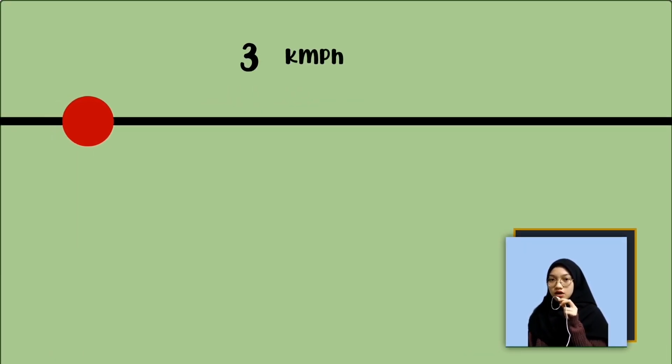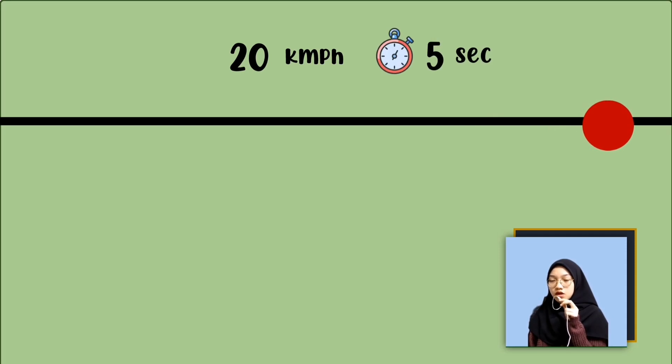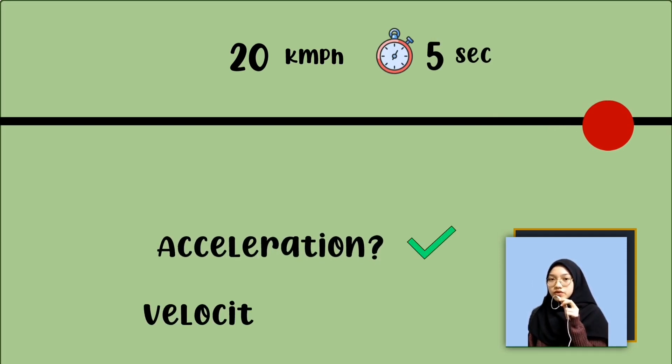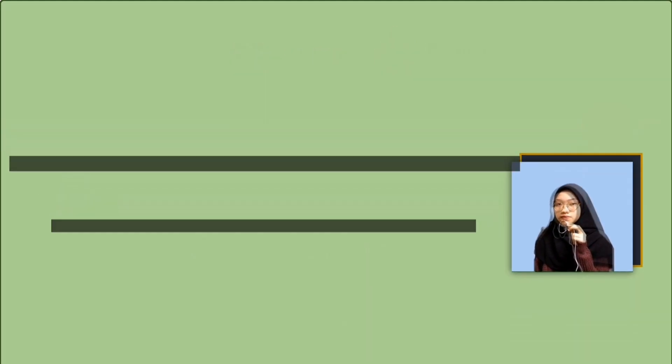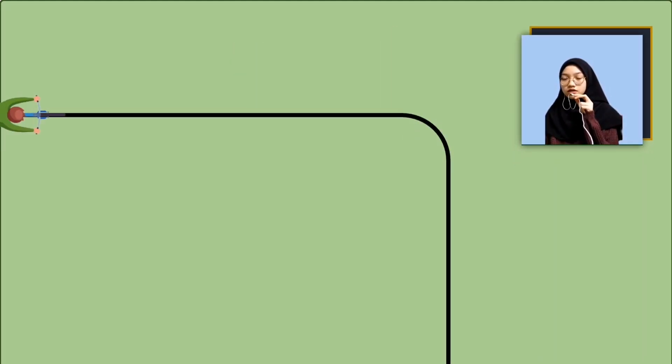Let's say a body moves from rest and reaches a velocity of 20 km an hour in 5 seconds. Will there be acceleration? Yes, because the velocity is changing. It was zero initially and at the end of 5 seconds it is 20 km per hour.